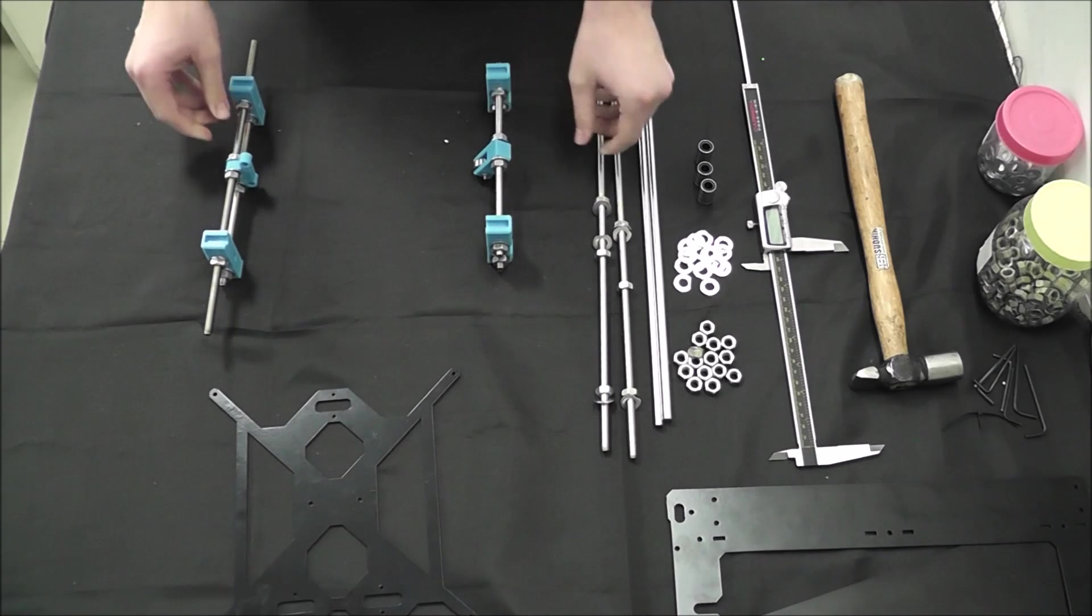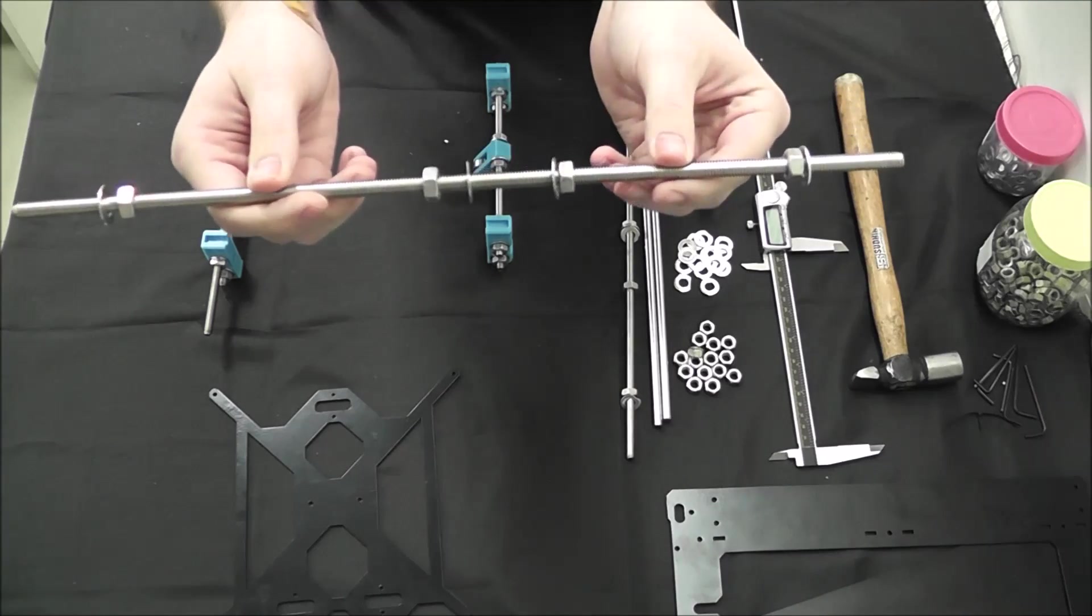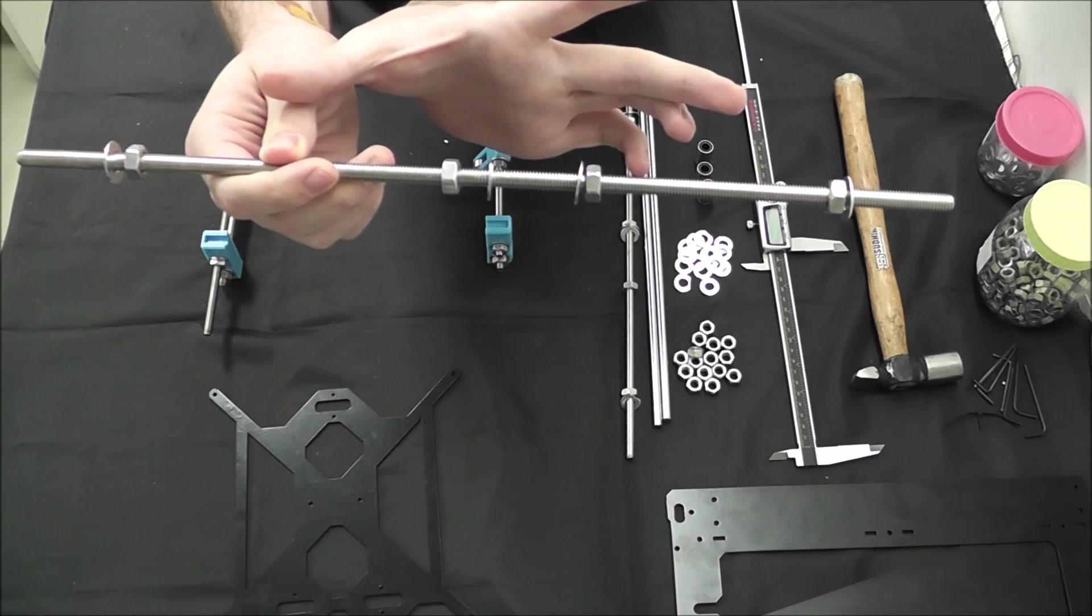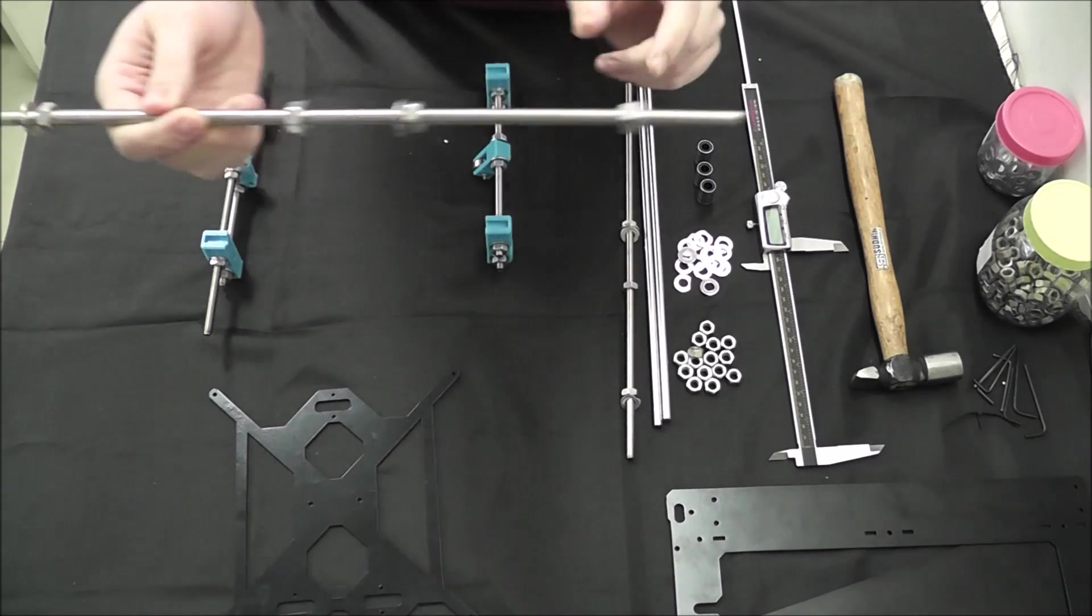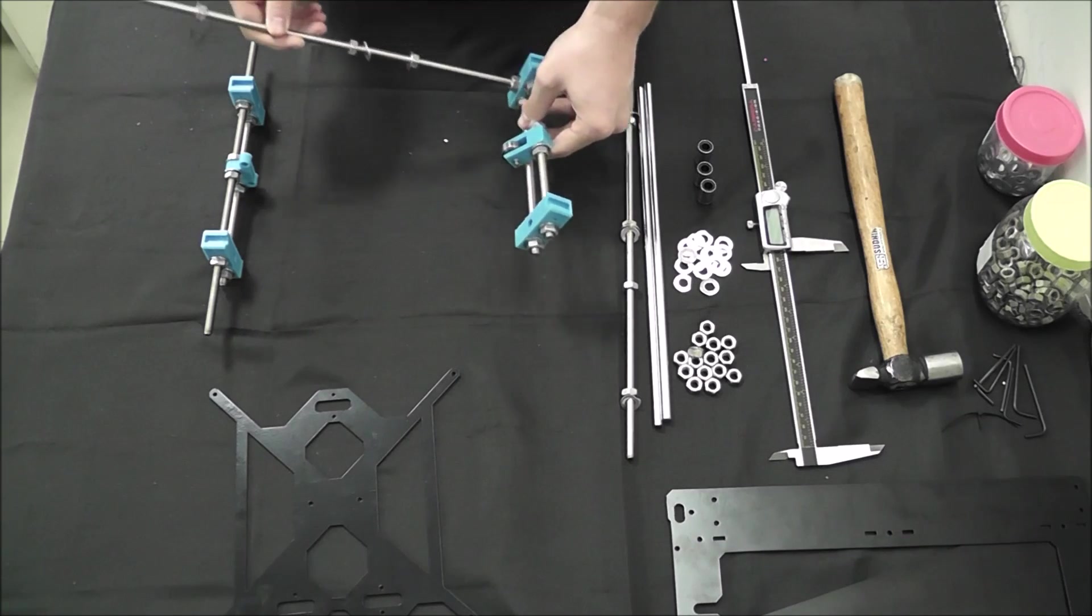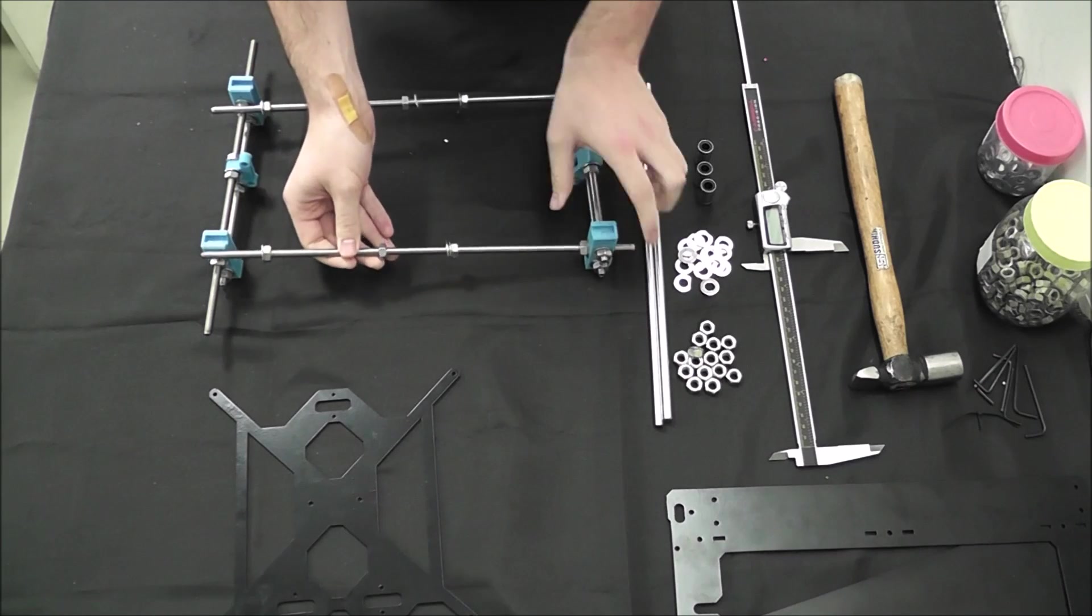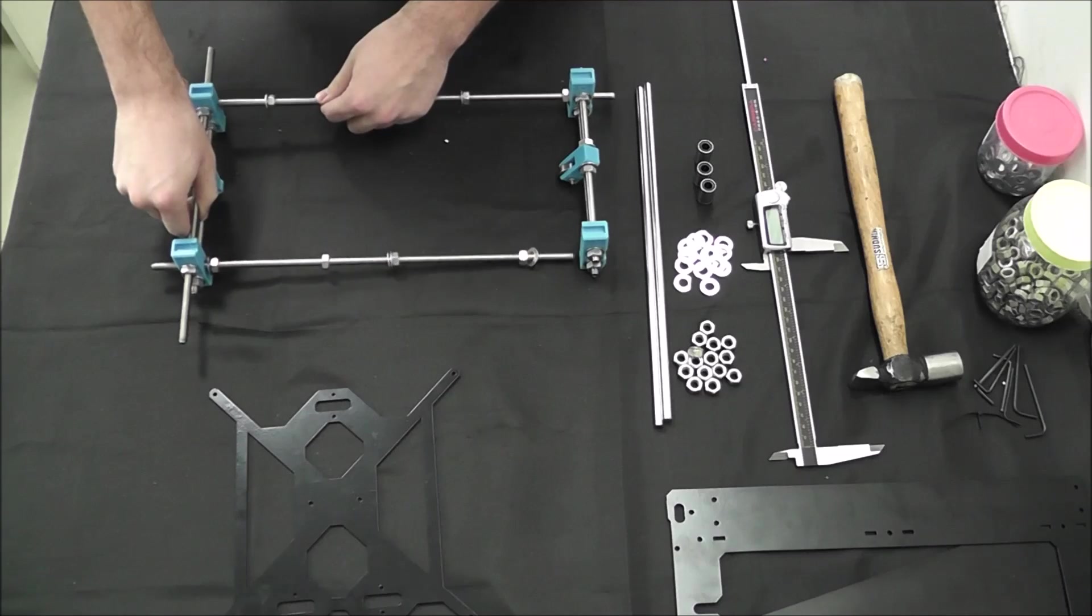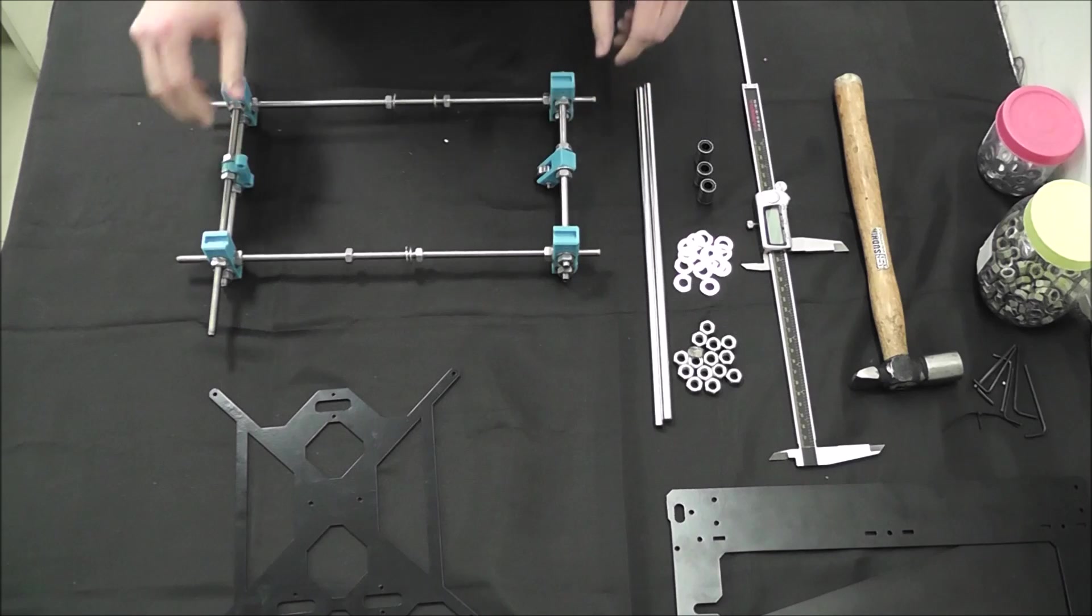So next we're going to assemble the threaded rods that go from end to end. We have two nut washer combinations on the side just to secure them to the plastic ends and then two in the middle to pinch them to the frame to add another point of contact and stability. So we're going to slide these in on either side. Right now the main governing distance is going to be the smooth rods that attach them.